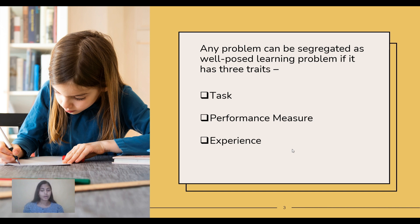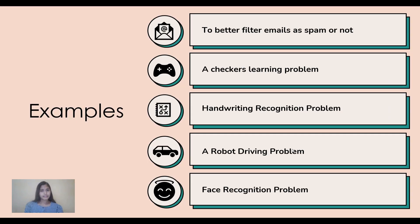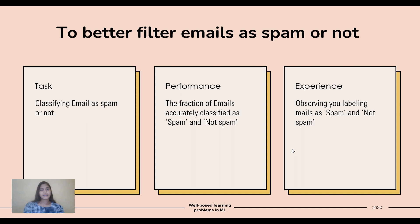Any problem can be categorized as a well-posed learning problem if it has these three traits: task, performance measure, and experience. Examples include filtering emails as spam or not spam, a checkers learning problem, handwriting recognition, a robot driving problem, and face recognition. Let's look at each one.